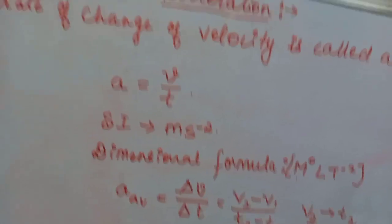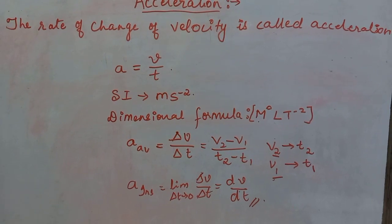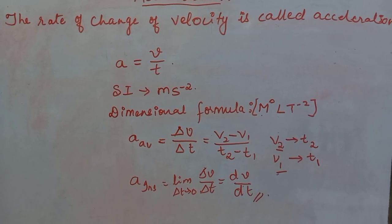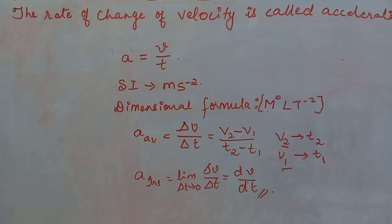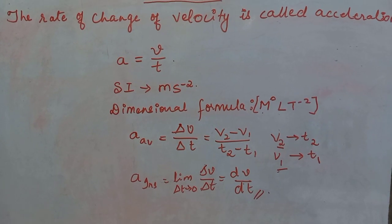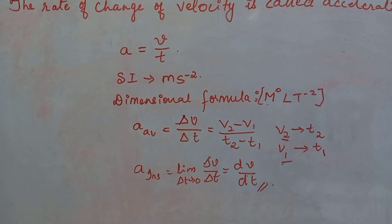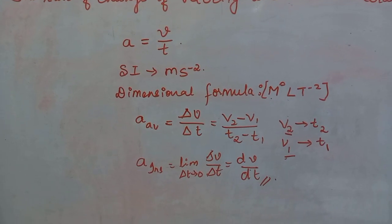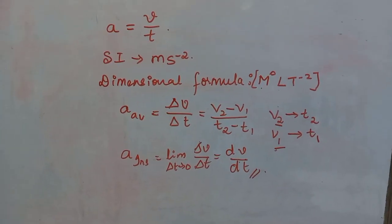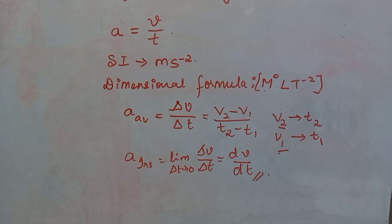To recap: the rate of change of velocity is called acceleration, A = V/T. SI unit is meter per second square. Dimensional formula is M⁰ L T⁻². Average acceleration is ΔV/ΔT = (V₂ − V₁)/(T₂ − T₁), where V₂ is the final velocity at T₂ and V₁ is the initial velocity at T₁. Instantaneous acceleration is the limit as ΔT → 0 of ΔV/ΔT, i.e., dV/dT.